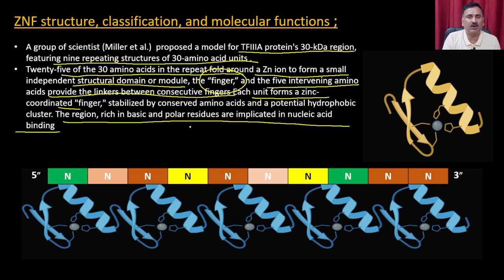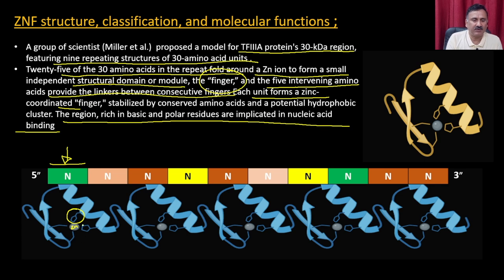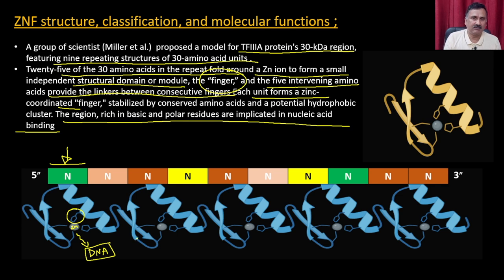Each unit forms a zinc-coordinated finger stabilized by conserved amino acids and a hydrophobic cluster. The region is rich in basic and polar residues implicated in nucleic acid binding. The zinc finger motif is a small protein designed with the zinc finger motif in a 30 amino acid residue, repeated multiple times, so that zinc can bind to these regions. This motif has affinity for DNA binding, making it exploitable for genome editing applications.